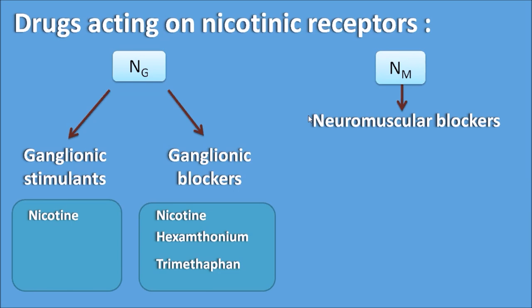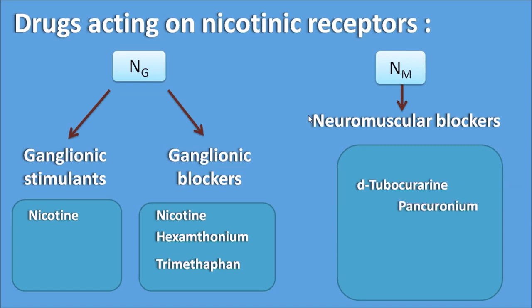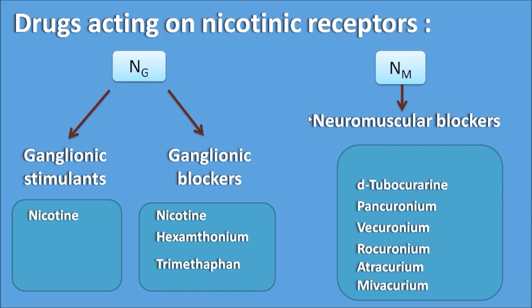One important category is the neuromuscular blockers acting on NM receptors. Non-depolarizing neuromuscular blockers include D-tubocurarine, pancuronium, vecuronium, rocuronium, atracurium, and mivacurium. The drug succinylcholine is a depolarizing neuromuscular blocker. So these are the various drug targets acting on the nicotinic acetylcholine receptors.